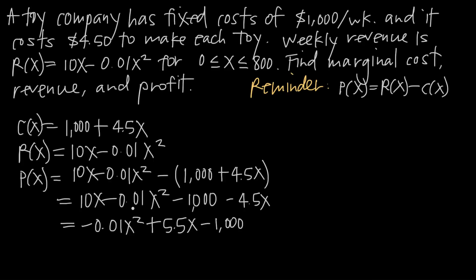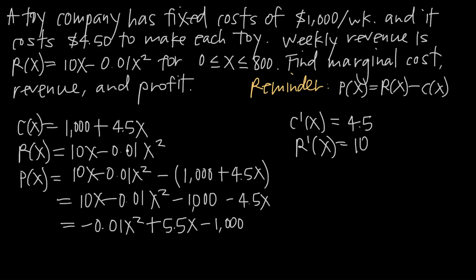Now that we have cost, revenue, and profit functions, we take their derivatives to find the marginal functions. For marginal cost, C'(x): the derivative of 1,000 is 0, and the derivative of 4.5x is 4.5, so C'(x) = 4.5. For marginal revenue, R'(x): the derivative of 10x is 10, and the derivative of −0.01x² is −0.02x (multiplying 2 by the coefficient and reducing the exponent). So R'(x) = 10 − 0.02x.